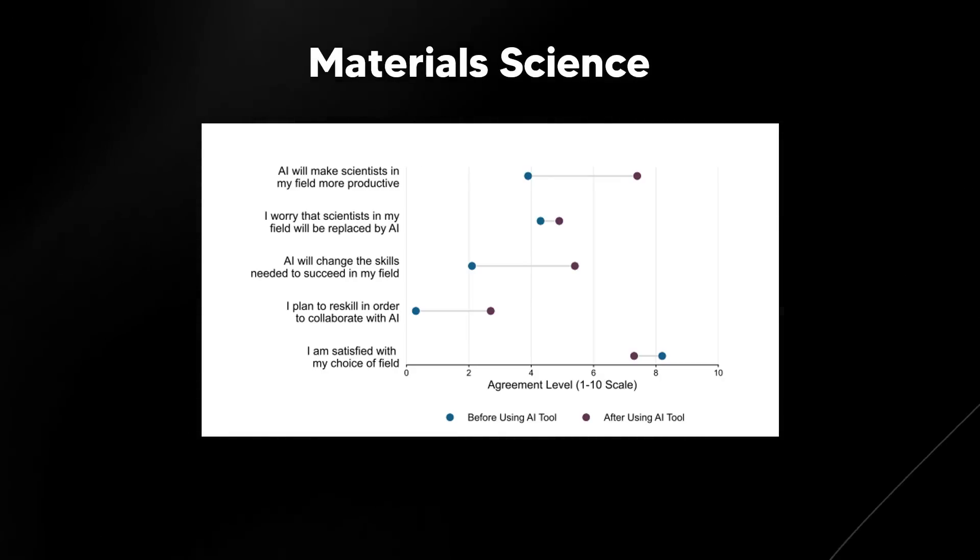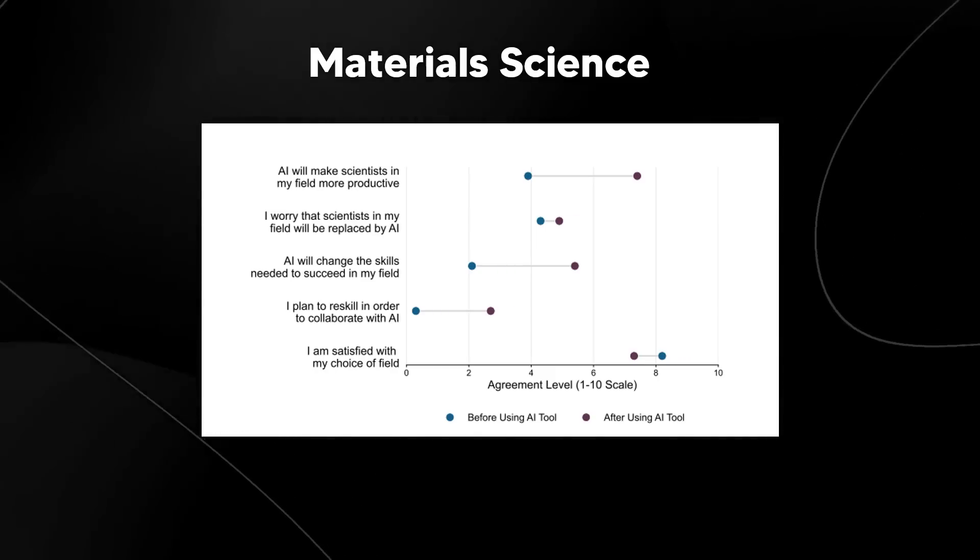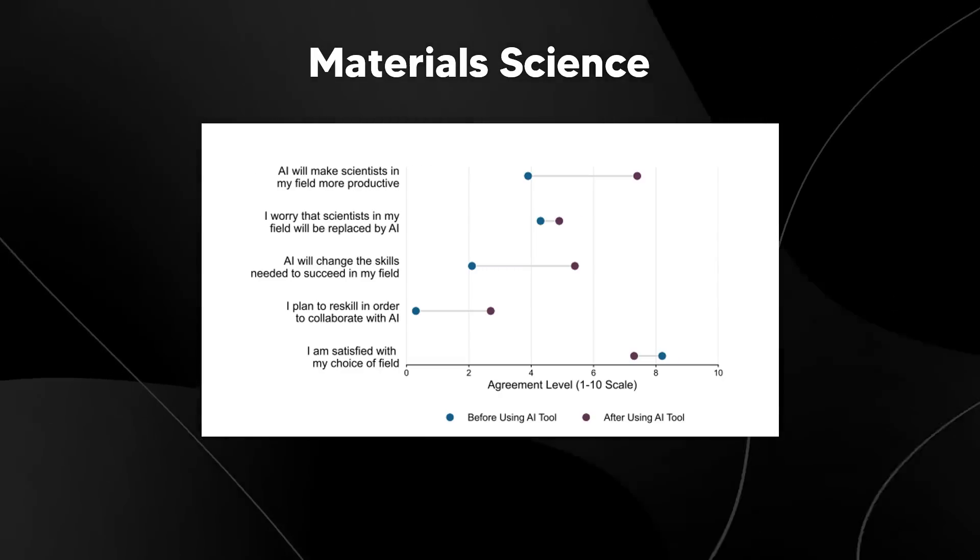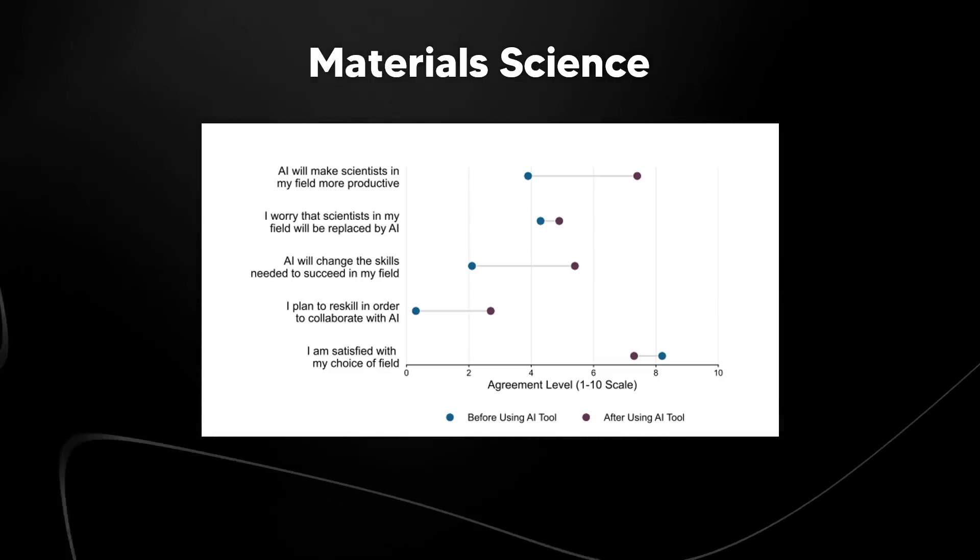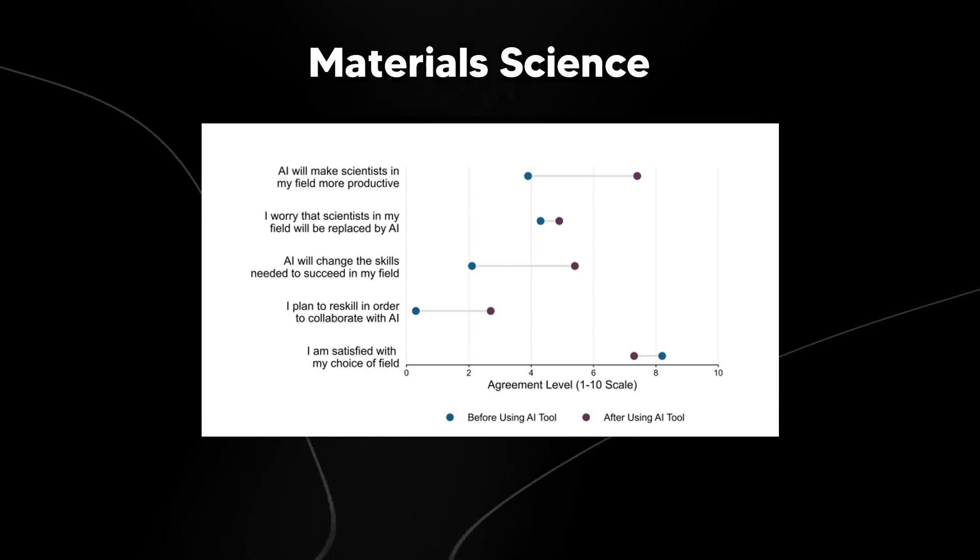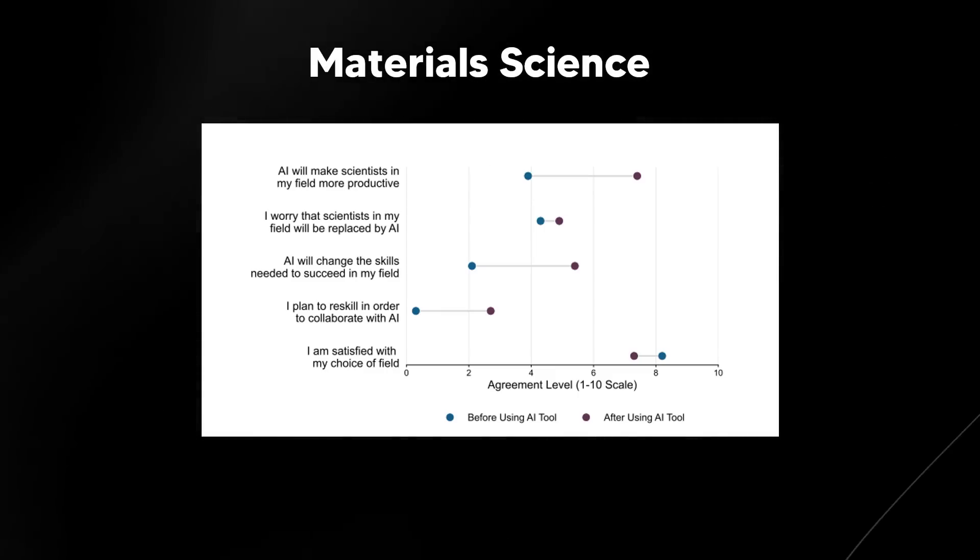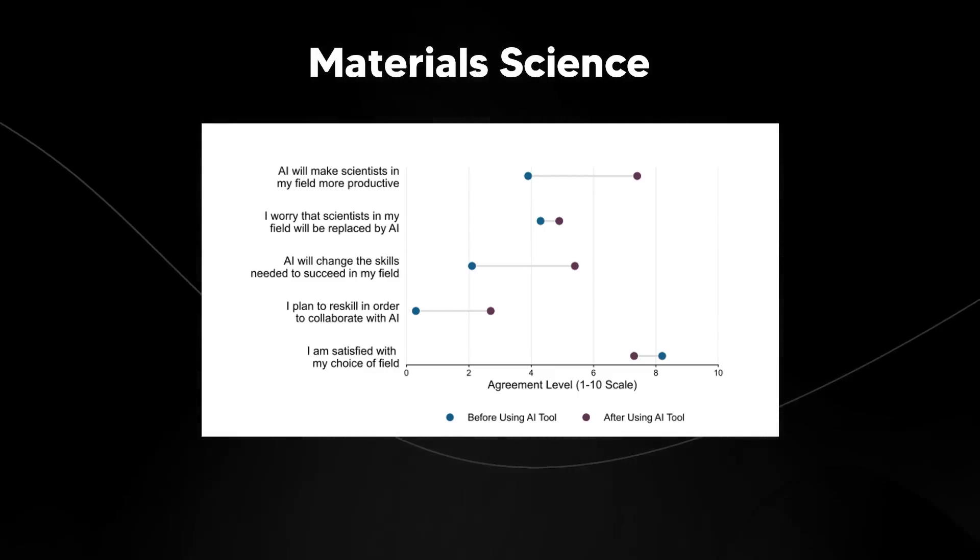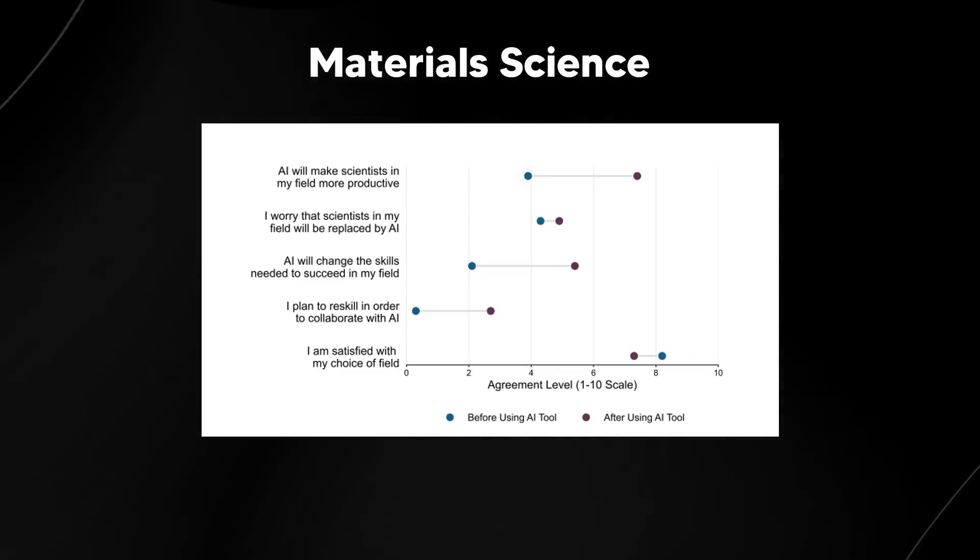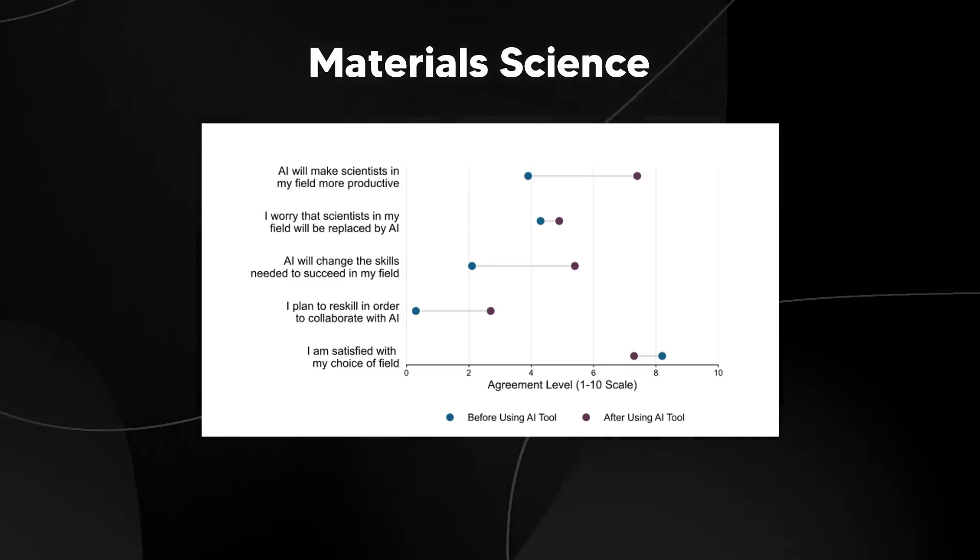One of the craziest things that I saw about the study was basically how these individuals had their attitudes changed after interacting with this AI tool, which highlights both the optimism and concerns regarding its impact. It basically tracks agreement levels across several statements measured on a 1 to 10 scale. Initially, scientists agreed that AI will make scientists in my field more productive, and this belief grew even stronger after they used the AI tool. However, concerns about AI replacing scientists also increased after using the tool, which suggests that direct experience with AI led to greater awareness of its disruptive potential. The agreement that AI will change the skills needed to succeed also rose, showing that scientists realized the need for new abilities whilst working alongside AI. Some scientists plan to reskill to collaborate effectively with AI. Interestingly, satisfaction with their choice of field decreased after using the AI tool, which reflects concerns over reduced creativity and increased automation in their roles.